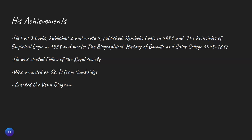He had some achievements, which included three books — two of them were published and he wrote one. The two that he published were Symbolic Logic in 1881 and the Principles of Imperial Logic in 1889. He also wrote the history of his college, Gonville and Caius College. He was elected part of the Royal Society and received a scientific doctorate from Cambridge University.